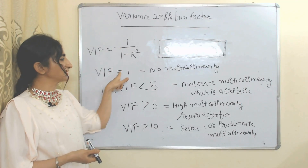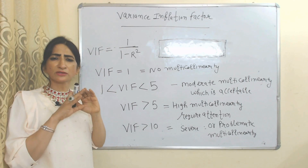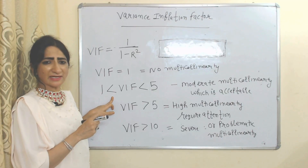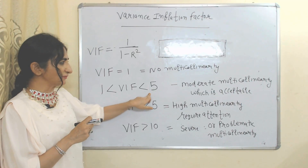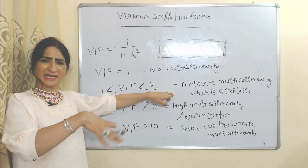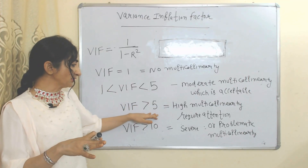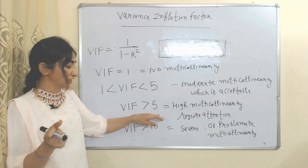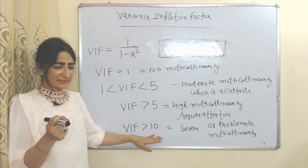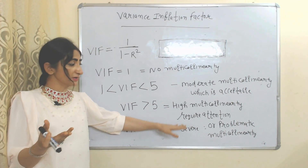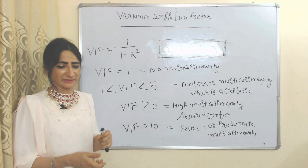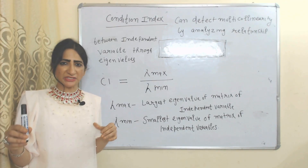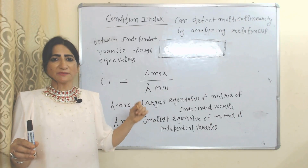Variance inflation factor (VIF) can also identify multicollinearity. The formula to calculate VIF is 1 over (1 minus R-squared). If VIF equals 1, there is no multicollinearity. If VIF is greater than 1 but less than 5, it indicates moderate multicollinearity, which is acceptable. If VIF is greater than 5, it indicates high multicollinearity requiring attention. If VIF is more than 10, it indicates severe and problematic multicollinearity.